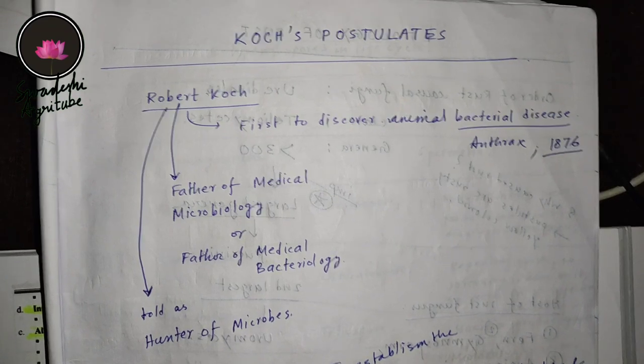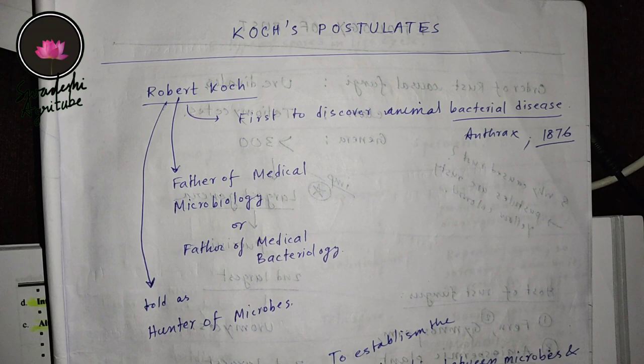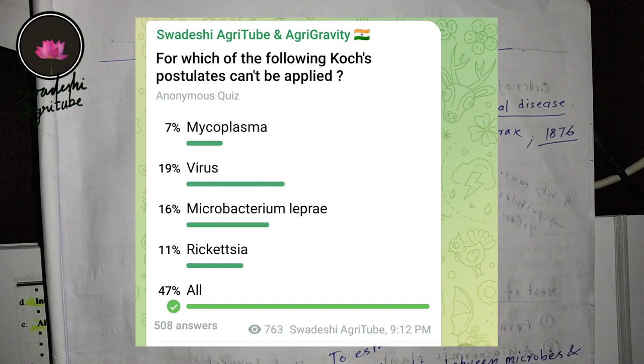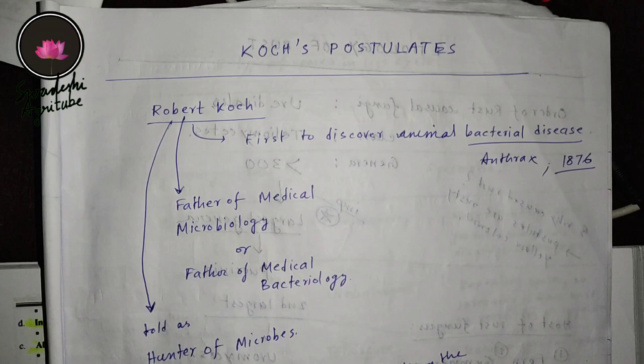Namaskar everyone. In my Telegram group, I organize a daily 9 p.m. quiz. One day I asked the question: Koch's postulate is not applied for which of the following microorganisms? Let's find the answer in detail. We all know that Koch's postulate is given by Robert Koch.